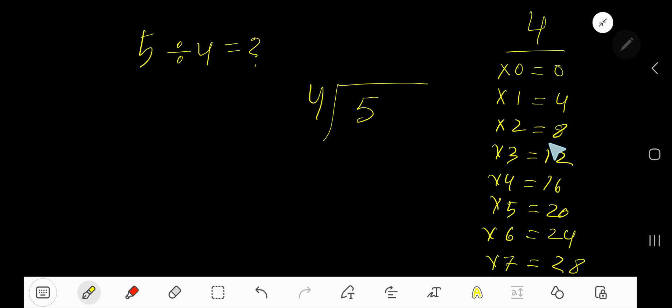5 divided by 4: 4 goes into 5 how many times? Look, 2 times is 8 which is greater, so 1 time. Write 1. 1 times 4 is 4. Subtract, you get 1.